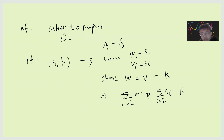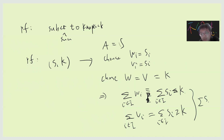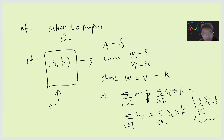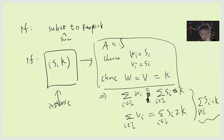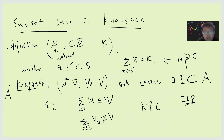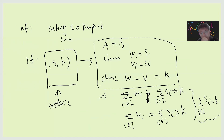More precisely, the weight constraint gives you the sum of s_i less than or equal to k, and the value constraint gives you the sum of s_i greater than or equal to k. Combining these two, you get the sum of s_i for i in I equals k. So if you can solve the knapsack problem, it is the same as solving the subset sum problem. This gives you the reduction instance of knapsack from subset sum. It's easy to verify there's no solution in one if and only if there's no solution in the other. This is a very simple proof that subset sum reduces to knapsack. See you guys in the next videos.